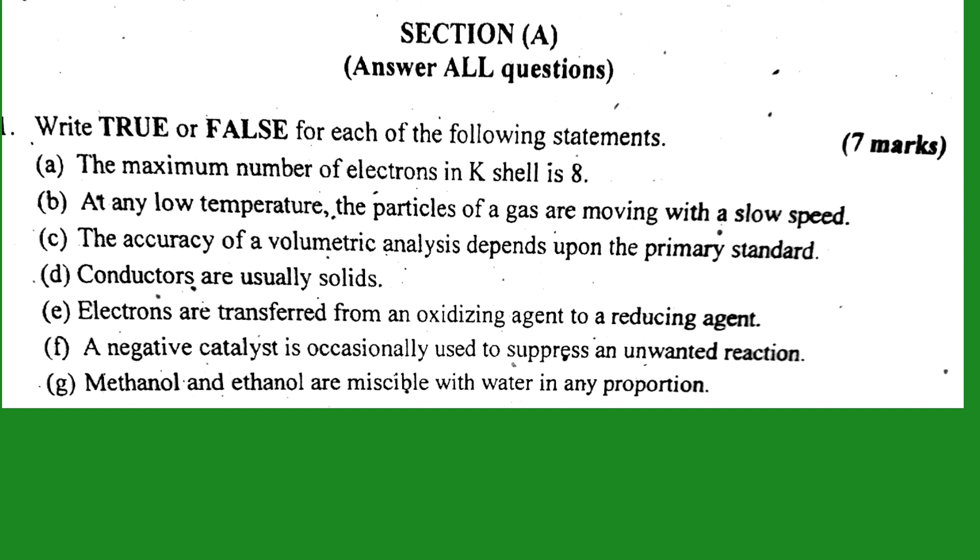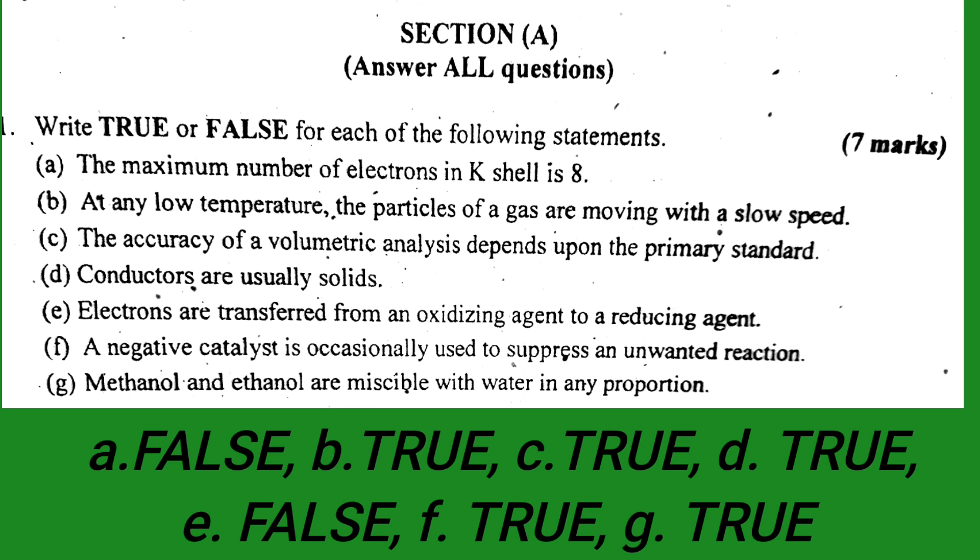False. This is false because the K shell is the first shell. Using the 2n² formula where n is the number of shells, if you plug in n=1, 2 times 1 squared equals 2. The maximum number of electrons in K shell is 2, not 8. So this is false.